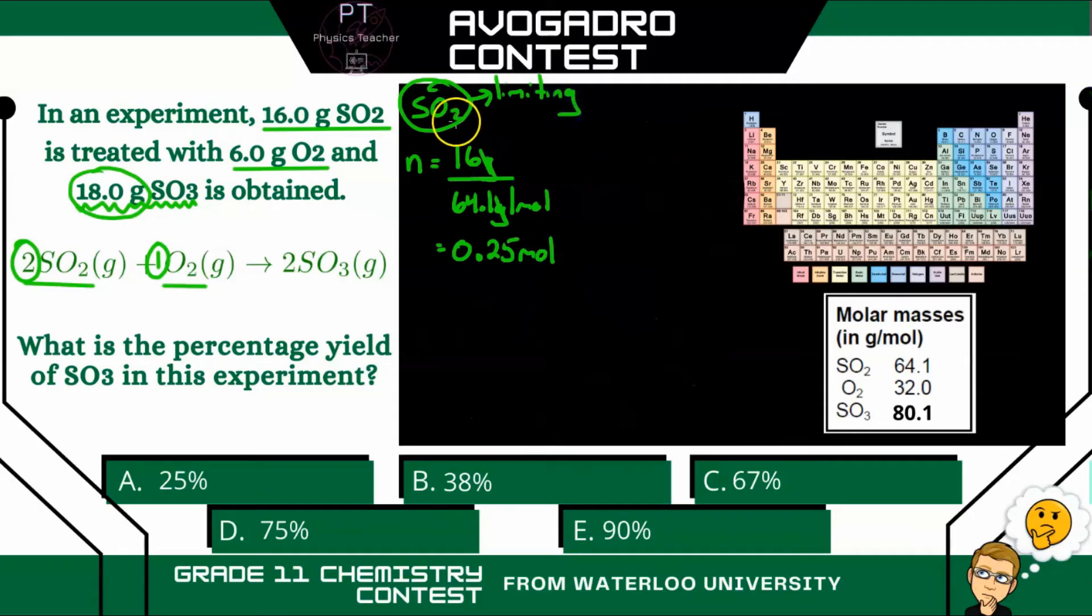All right, then. So if we have 0.25 moles of SO2, and our ratio of SO2 to SO3 is 2 to 2, or just 1 to 1, that means we also have the amount of SO3 will be 0.25 moles.